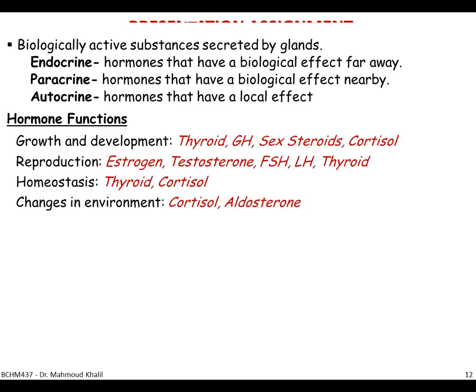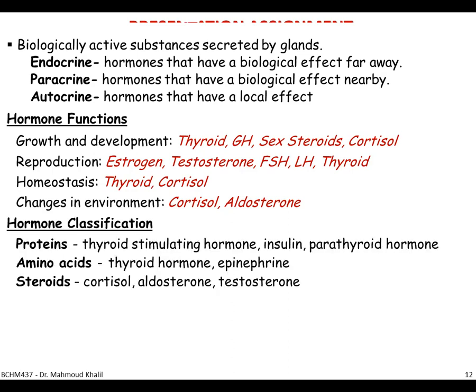Hormone functions can be summarized into: growth and development — involving thyroid hormone, growth hormone, sex steroids, and cortisol; reproduction — involving estrogen, testosterone, FSH, LH, and thyroid hormones; homeostasis — mainly thyroid hormone and cortisol; and responding to environmental change — involving hormones like cortisol and aldosterone. Hormones can be classified into proteins, amino acids, and steroids, and we will deal with each type later in the lectures.